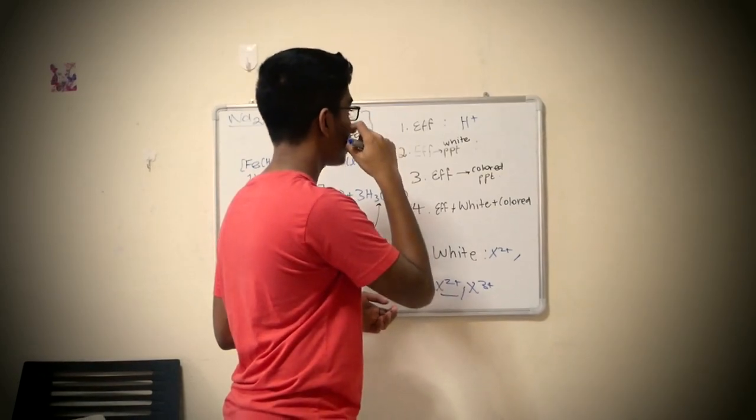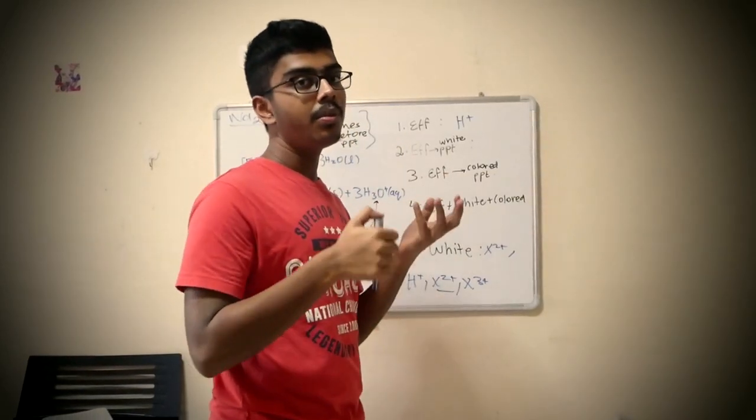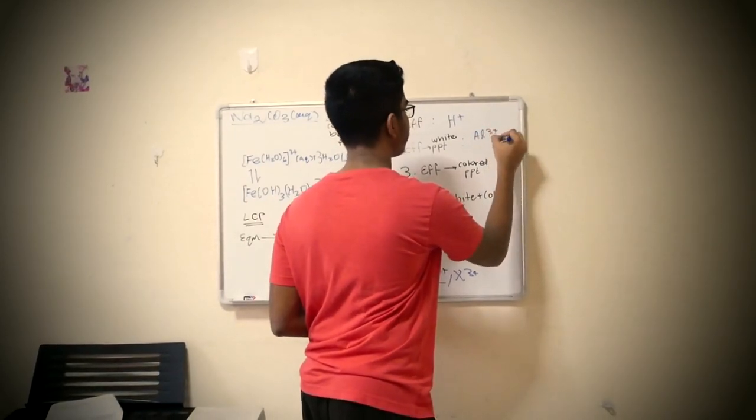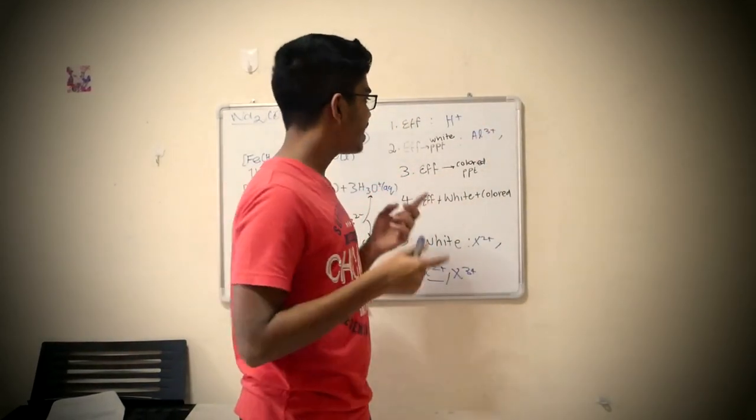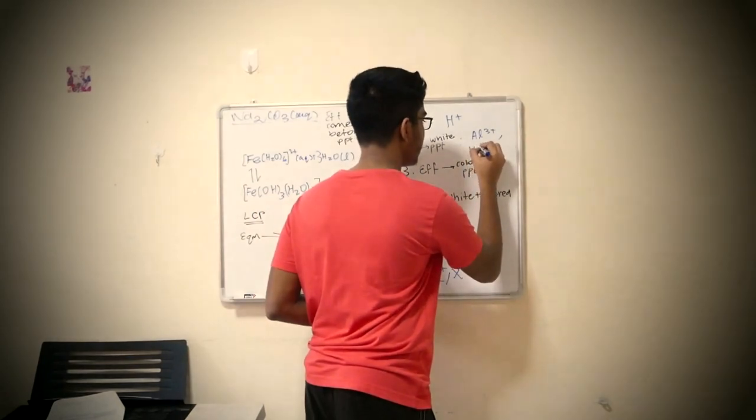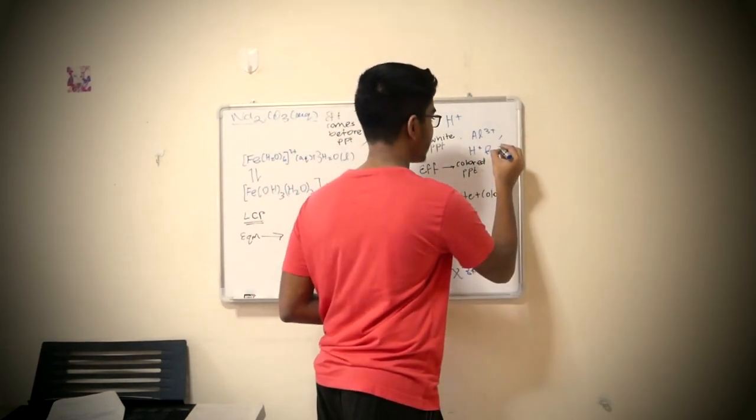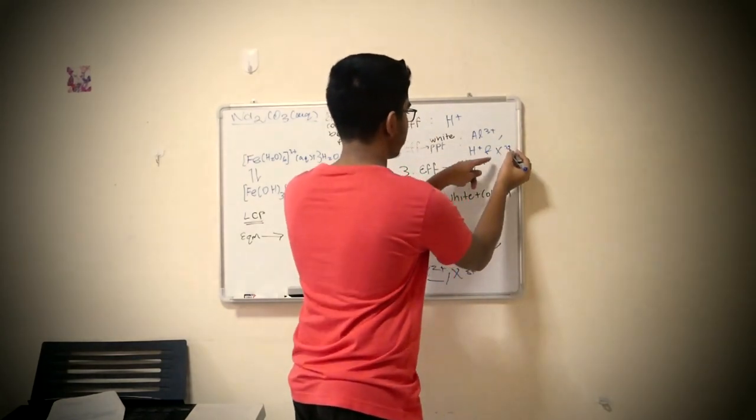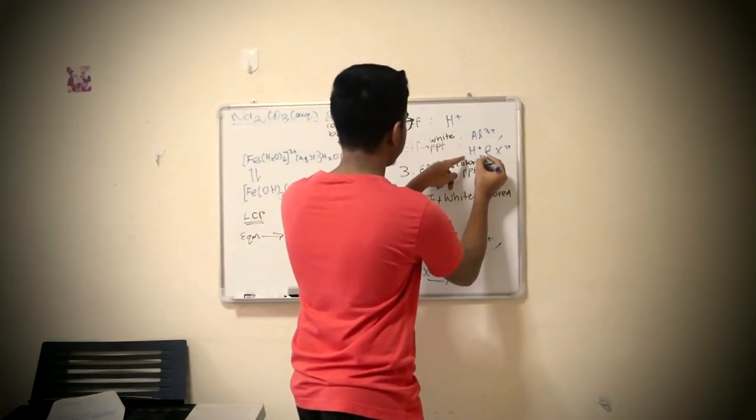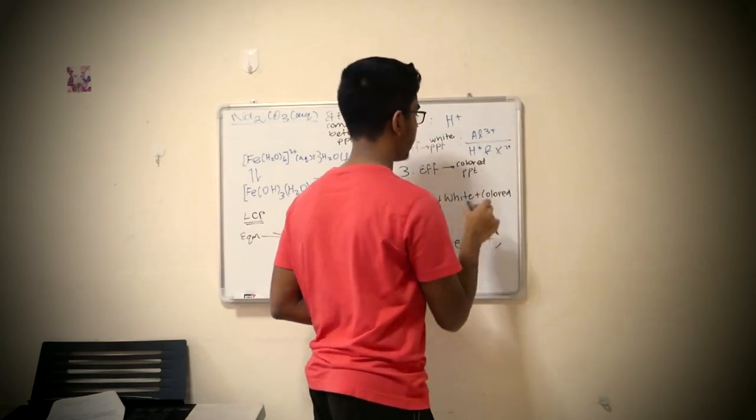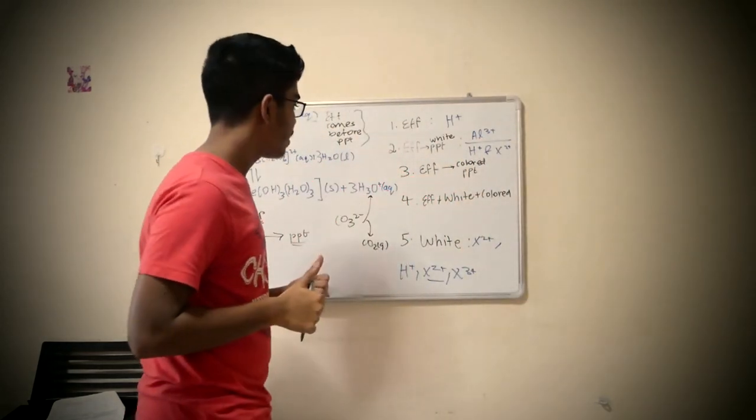Let's look at this one. Effervescence to give you a white precipitate. Really, aluminum can be in there. What else? An interesting combination of H+ and what else? A 2+ ion. Your 2+ will be responsible for the precipitate. Your H+ for the effervescence. So this is like an either or. Good?